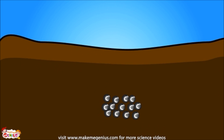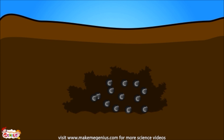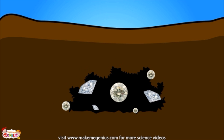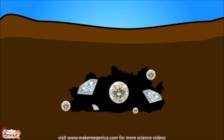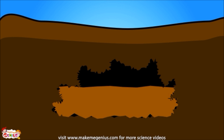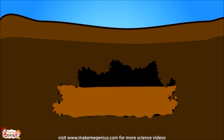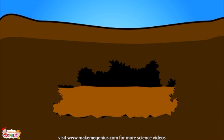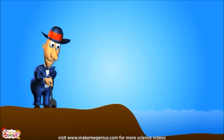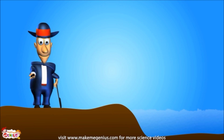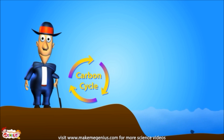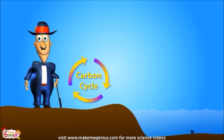Over millions of years, the trapped carbon changes shape. It can end up as a diamond, probably coal, or fossil fuels such as petrol and diesel. The same cycle happens in water, too. In fact, the ocean floor has such huge amounts of carbon stored in it that it is called a carbon sink.